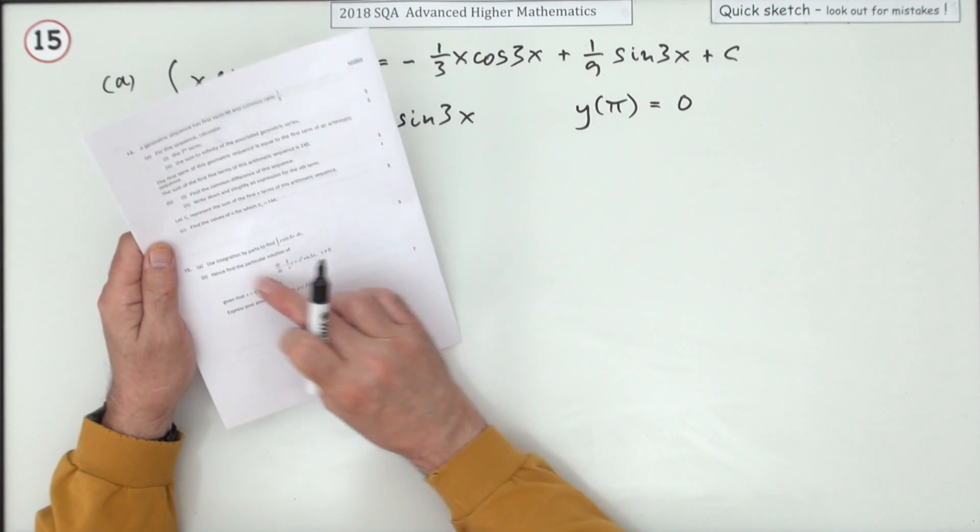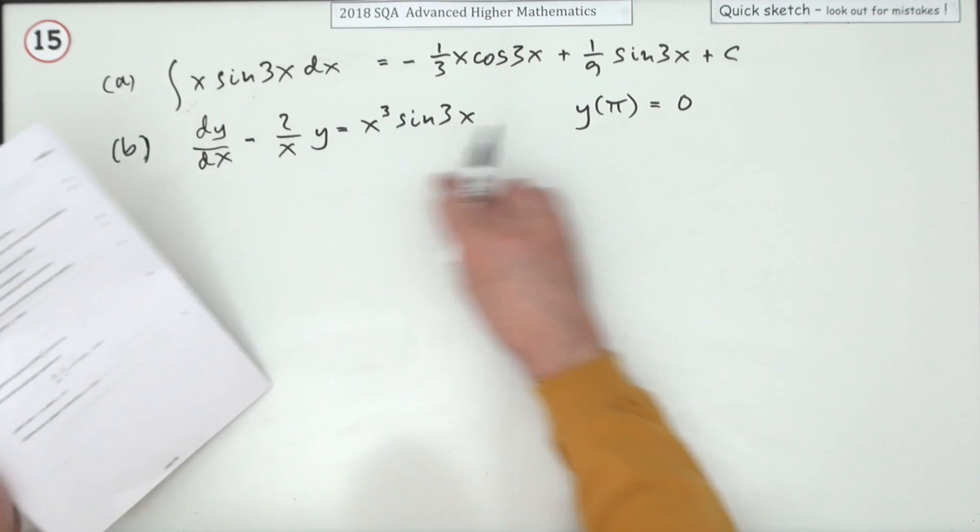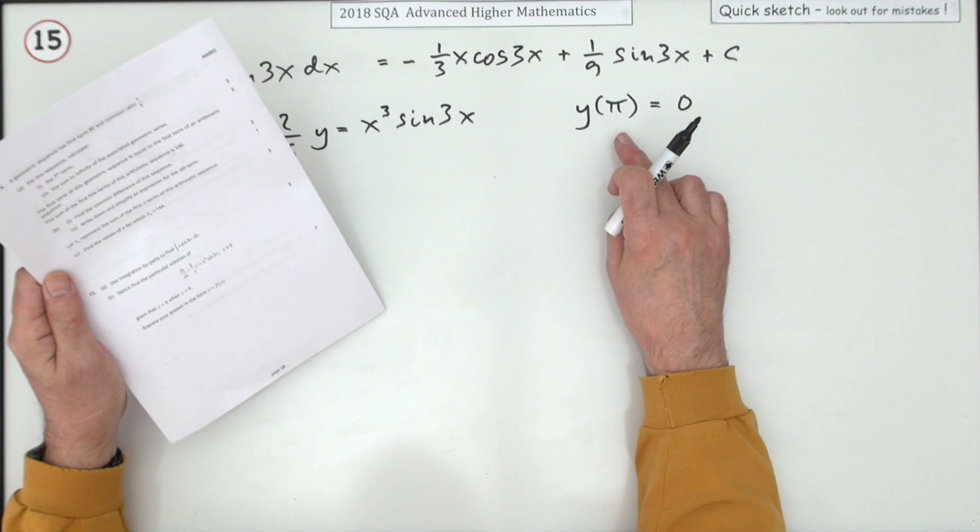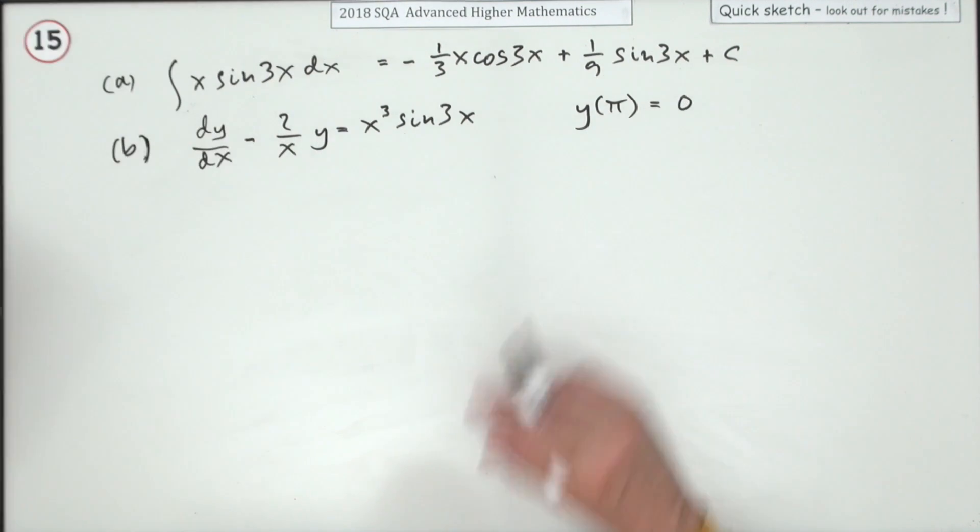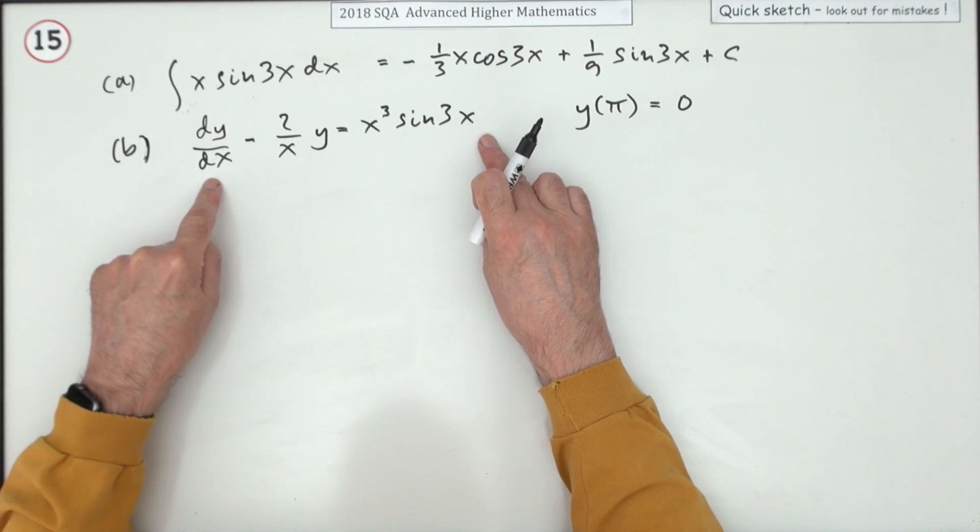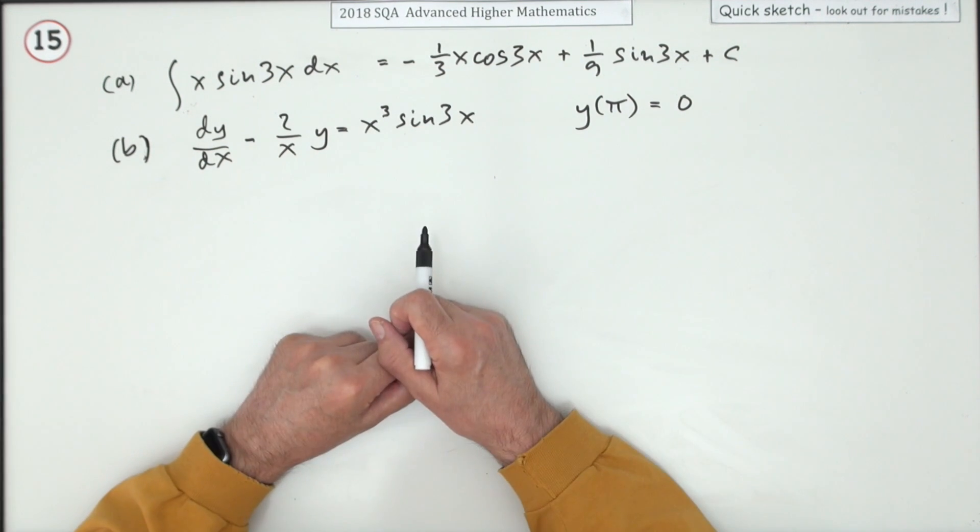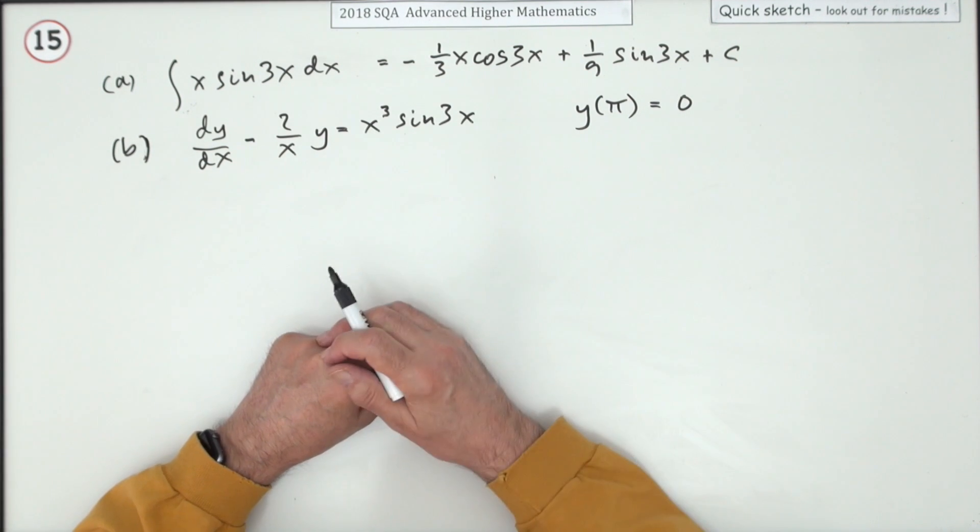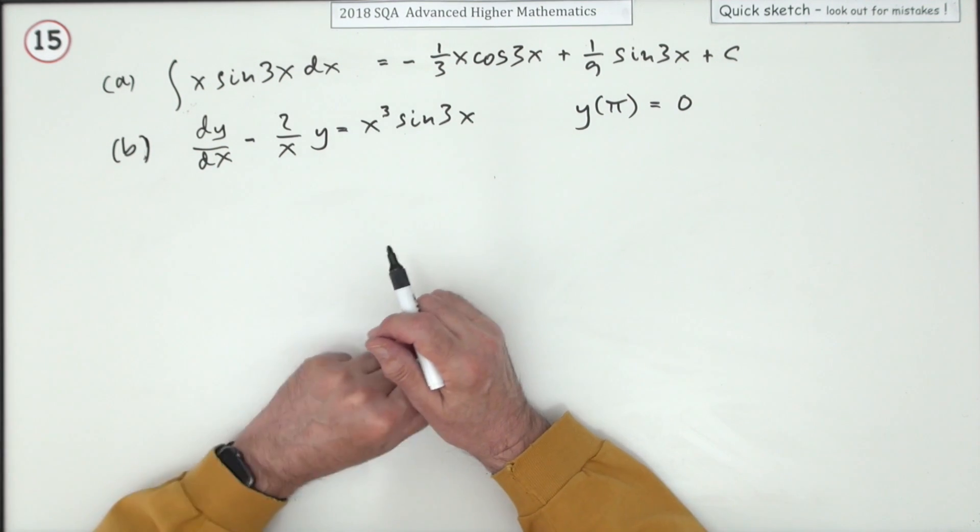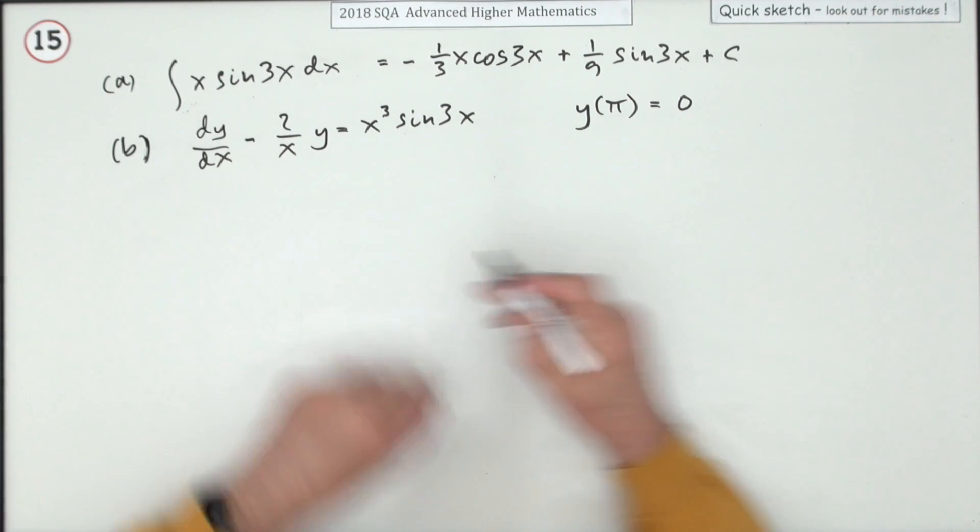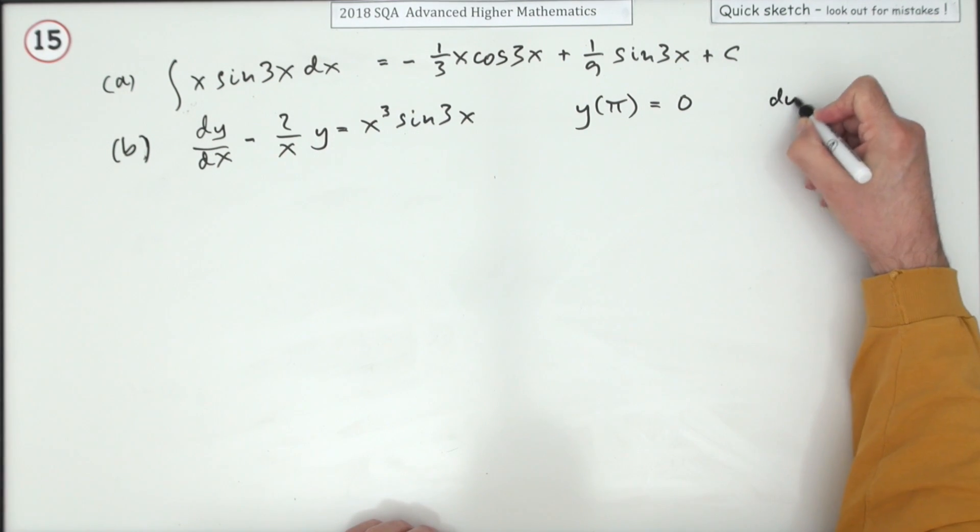Part b then: hence find the particular solution of this given that x equals π when y is zero. You've got a first-order linear power one differential equation to solve to get the particular solution.